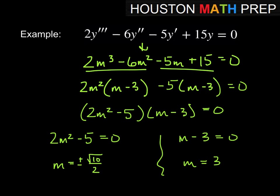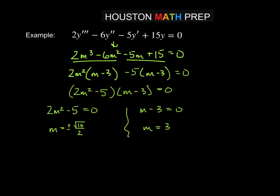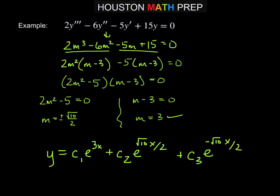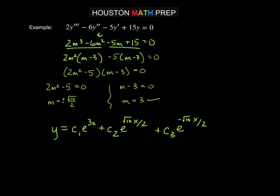And so now we can use these three values for m. These are distinct, so we can just go ahead and state our answer with each of these as part of an exponential. So we get y equals c1. I'll go ahead and write e to the 3x. We'll use our 3. And then to use our plus minus over here, so we'll have c2 e to the root 10x over 2 plus c3 e to the negative root 10x over 2. Or another way to write these last two,